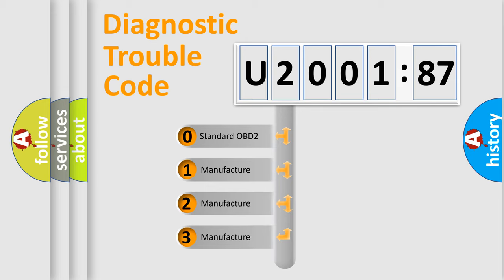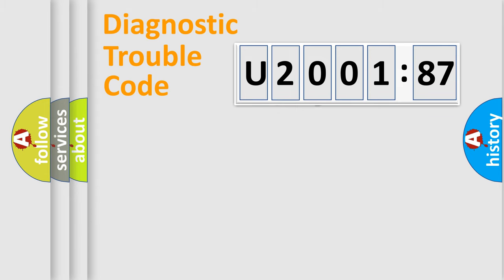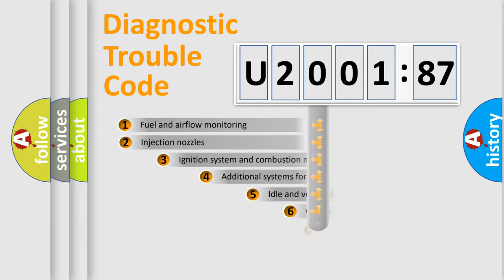If the second character is expressed as zero, it is a standardized error. In the case of numbers 1, 2, 3, it is a manufacturer-specific expression of the car-specific error.